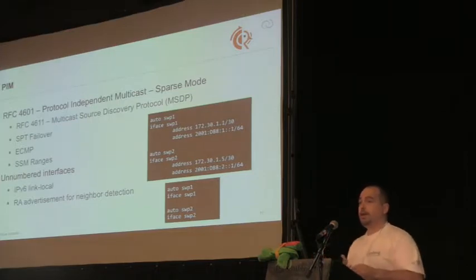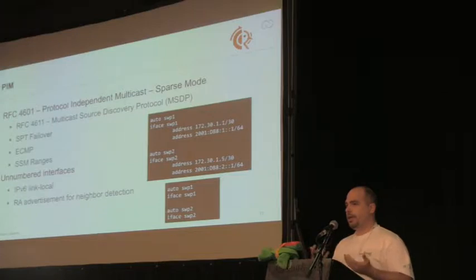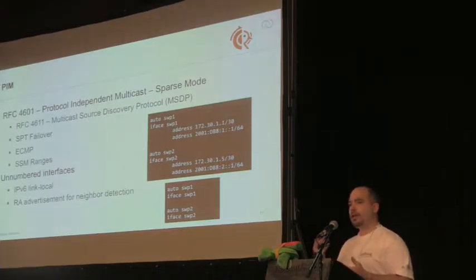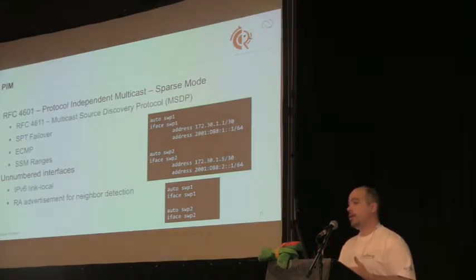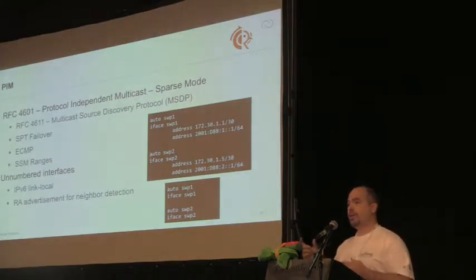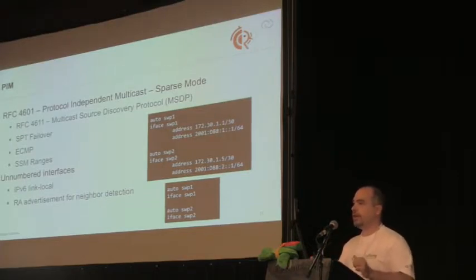ECMP support was added. One of the things we use a lot in Cumulus deployments is unnumbered interfaces — available for both BGP and OSPF. You use IPv6 link-local addressing to set up a neighbor relationship. That basically means you don't have to configure any IP addressing on your backbone interfaces, which helps a lot when automating everything. Your configuration is much smaller with far fewer variables to manage.